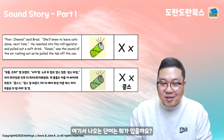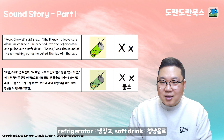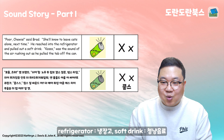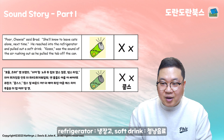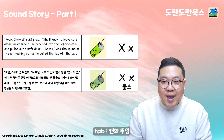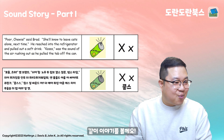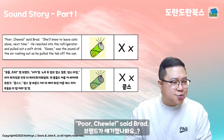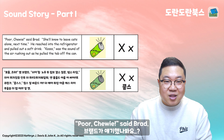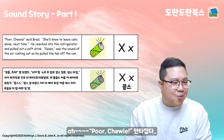Let's look at the words. Refrigerator — 냉장고. Soft drink — 청량 음료. Tab — can 뚜껑이 있어요 (the tab on the can).